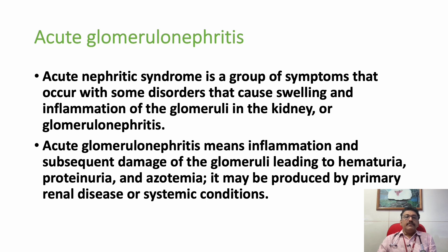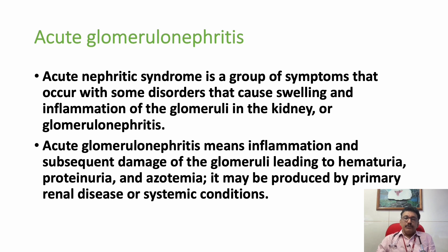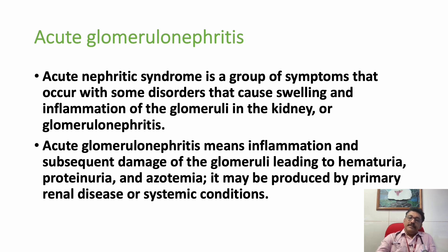Glomerulonephritis produces inflammation, swelling, and infiltration of various cells into the glomeruli, producing hematuria, some proteinuria, and hypertension. It mainly occurs due to infection, which is one of the major causes of acute glomerulonephritis. Other immune-mediated diseases can also present with glomerulonephritis. We will see the causes next.